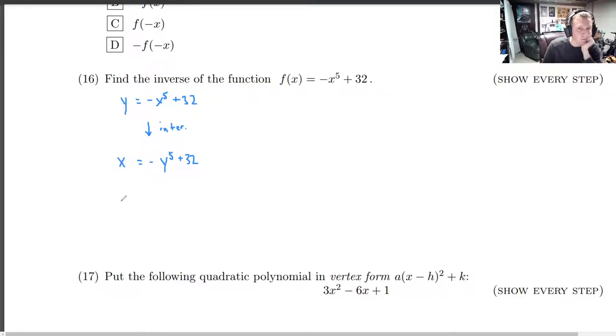So in this one, we've got subtracting 32 over x minus 32 equals negative y to the 5th. Don't want to lose that negative sign. Then we want to negate. So we want to divide both sides by that negative 1 to get rid of that negative sign, which gives us 32 minus x equals y to the 5th.